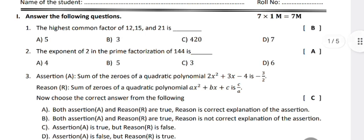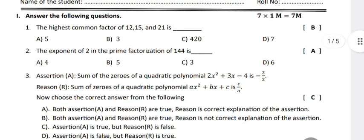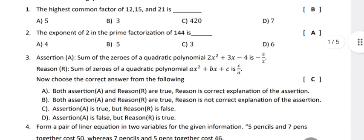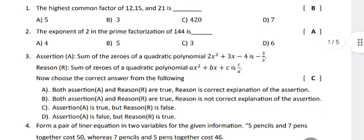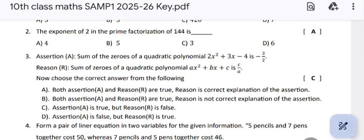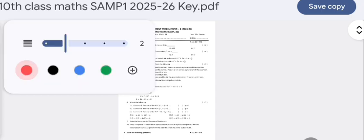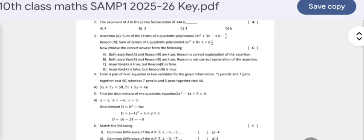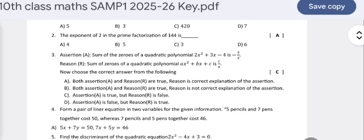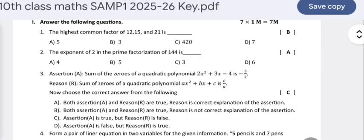Clearly it is 3, so the answer is B. The exponent of 2 in the prime factorization of 144: when 144 is continuously divided, we get 2 to the power of 4 into 3 squared, so the highest power of 2 is 4.